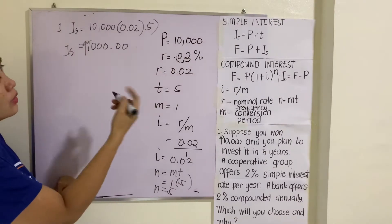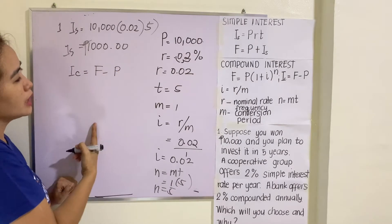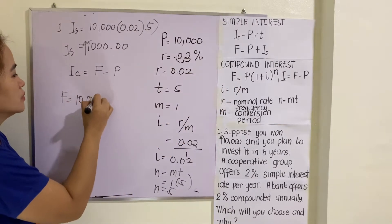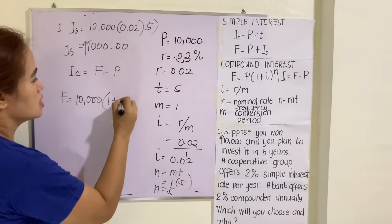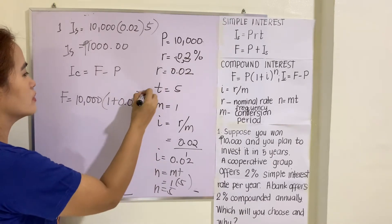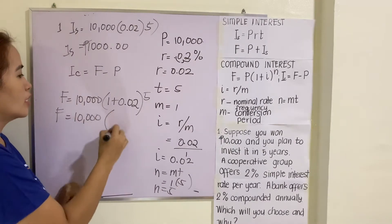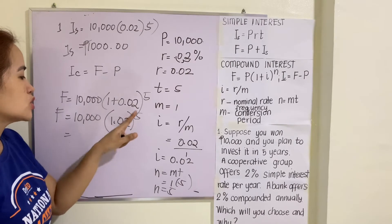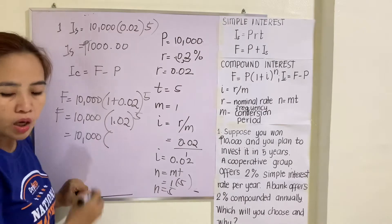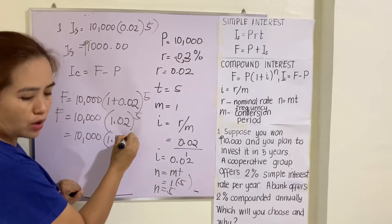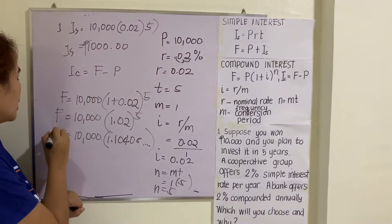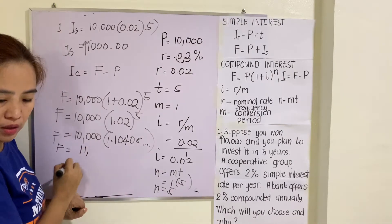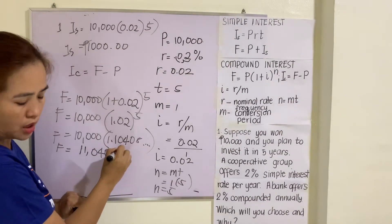For compound interest, I sub C equals F minus P, but we don't have F yet, so we solve for F first. F equals ten thousand times one plus 0.02 raised to five, which is ten thousand times one point zero two raised to five. One point zero two raised to five equals approximately one point one zero four zero eight, so multiplying gives F equals eleven thousand forty point eighty one.